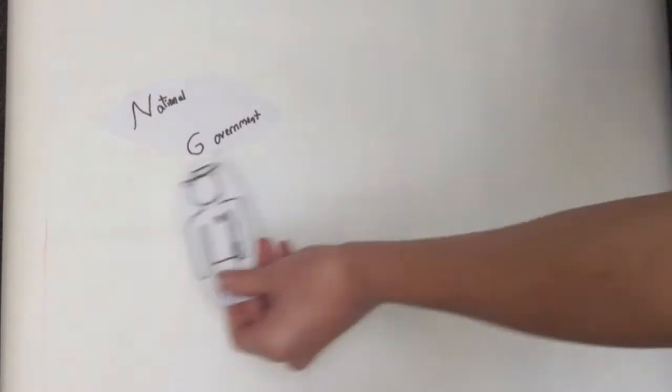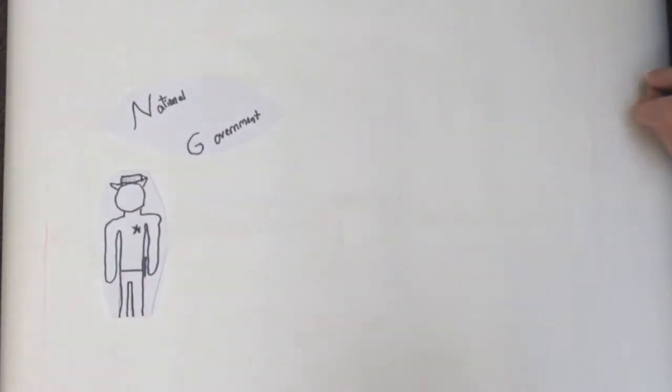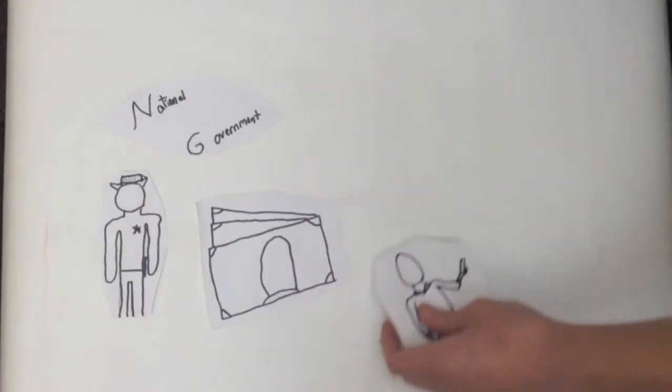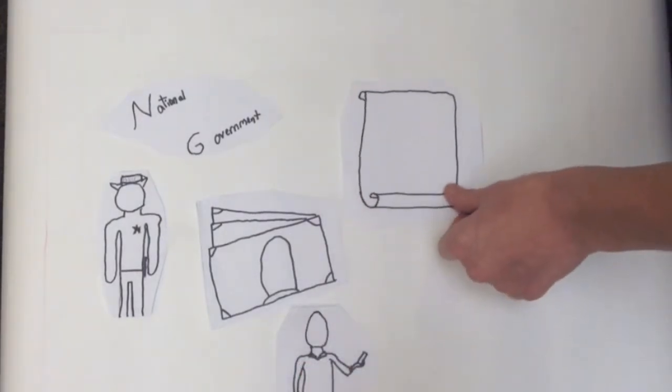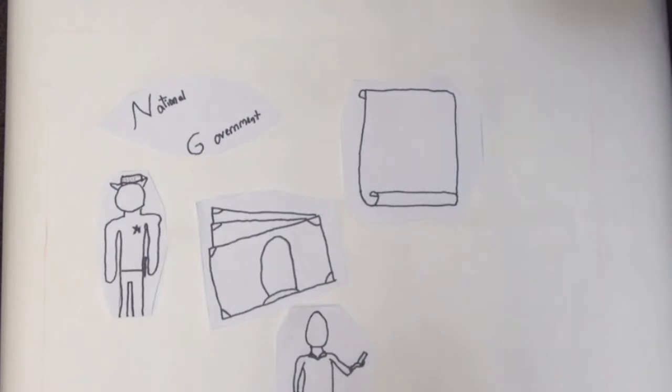The national U.S. government has powers to enforce and amend laws which regulate national security and welfare. These are delegated powers. Some of these powers include the power to print and regulate money, the power to regulate interstate and international trade, the power to make treaties and conduct foreign policy, and the power to provide an army and navy.